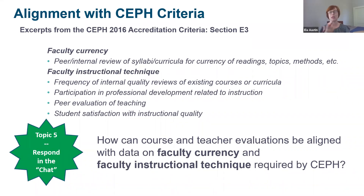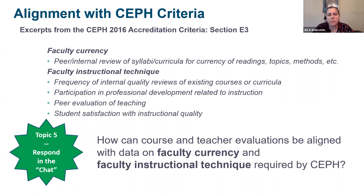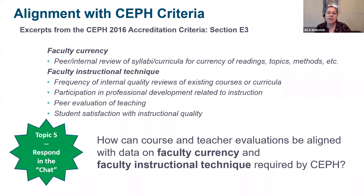How can we work to find an alignment between course and teacher evaluations and what CEPH is asking us to gather — so we're not doing additional data collection, but reflecting differently on data we're already collecting? Student satisfaction with instructional quality — what we'd think of as our typical course evaluation — is actually at the very bottom of that CEPH list. CEPH is pushing us to think more holistically. This also connects back to peer feedback, because frequency of internal quality reviews and participation in professional development and peer evaluation is listed in the CEPH criteria — a good selling point for administrators.